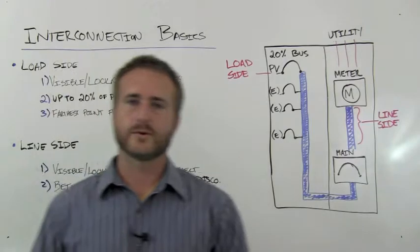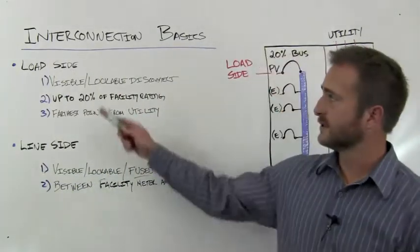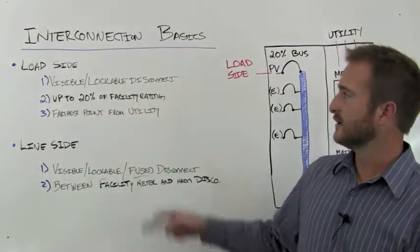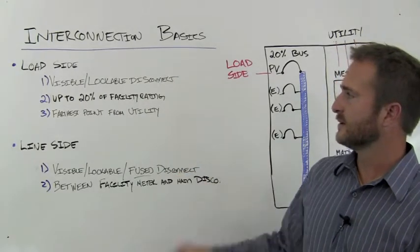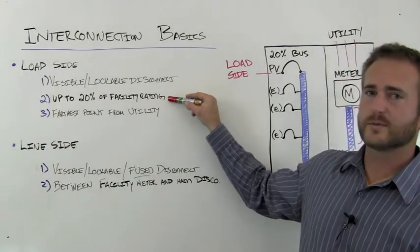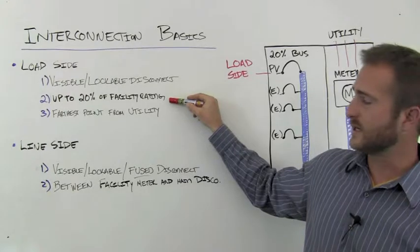So it's really pretty simple. To go back over those main points: load side, line side—you're going to need a visible lockable disconnect in either case. Load side, you can install up to 20% of the rating of your main gear.